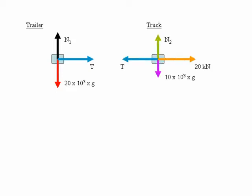Next we draw the free body diagram for the truck. Again, in the vertical direction we have the weight of the truck acting downwards and the normal reaction force N2 acting vertically upwards. In the horizontal direction we have the force of the engine of the truck, the 20 kN force acting in the positive x direction and the tension in the tow bar T acting in the negative x direction.